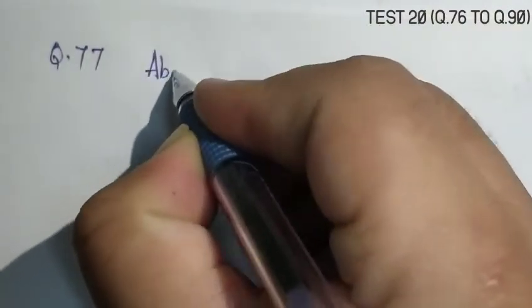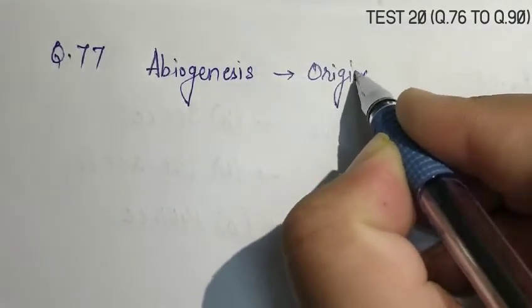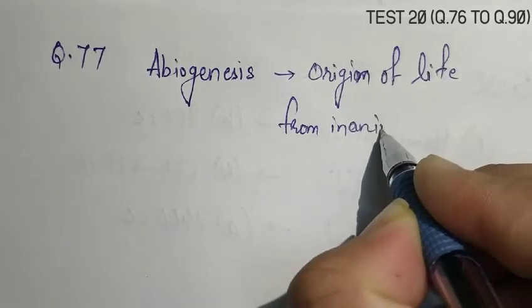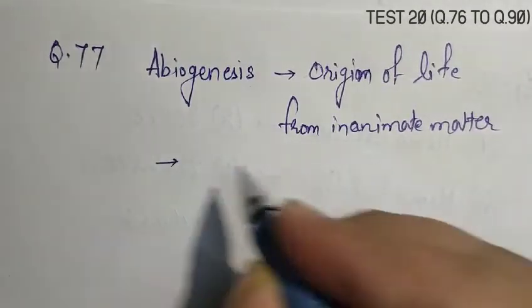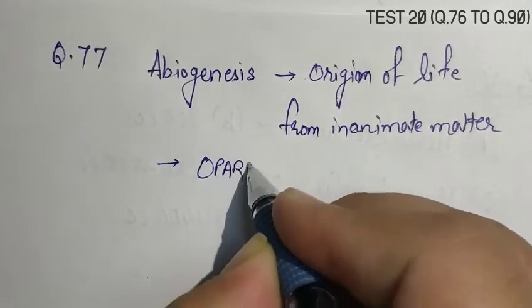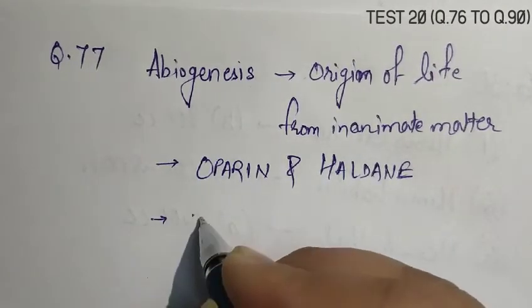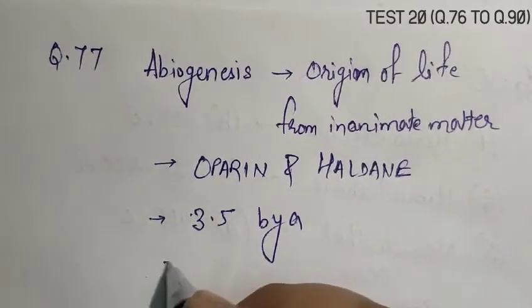Question number 77, the abiogenesis occurred about how many billion years ago? Abiogenesis is the origin of life from inanimate matter. This was told by Oparin and Haldane, and it occurred 3.5 billion years ago. So, correct answer is D.